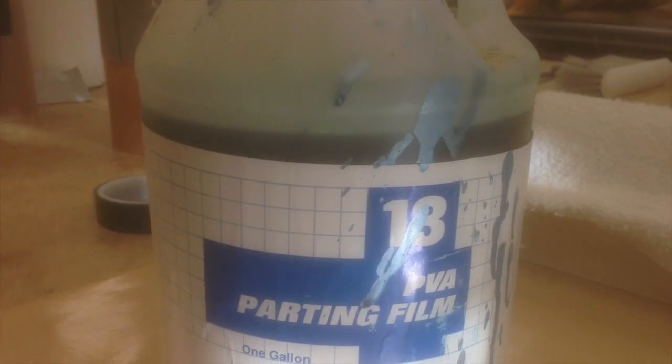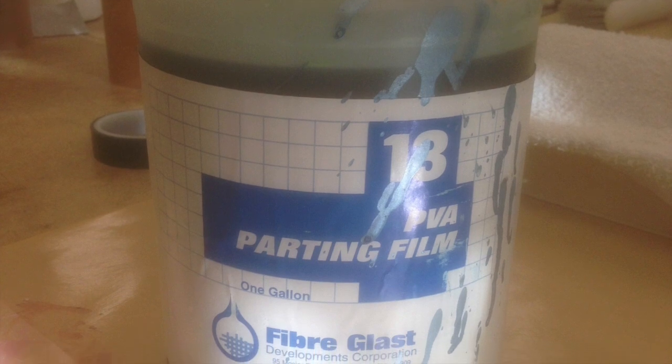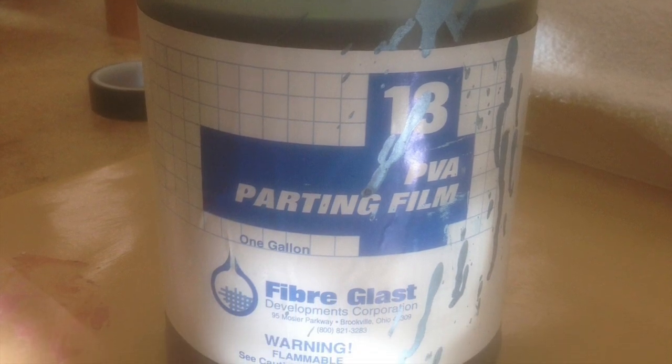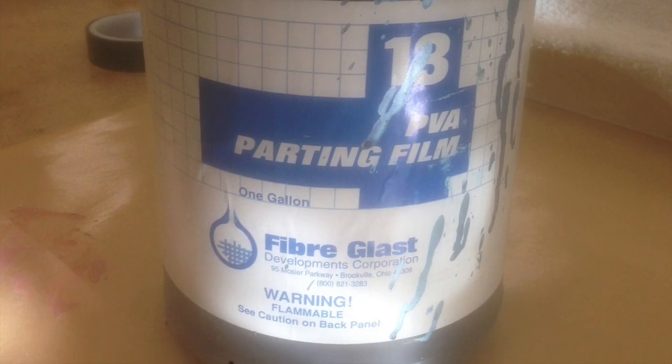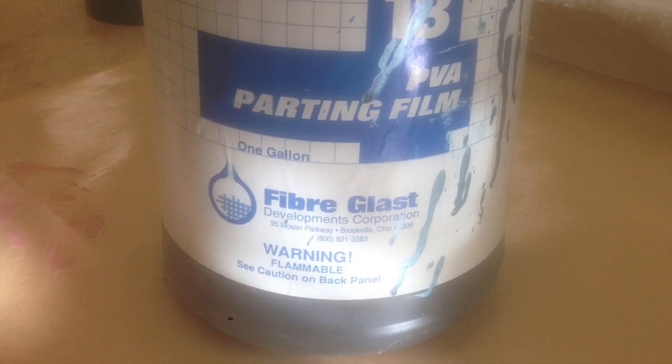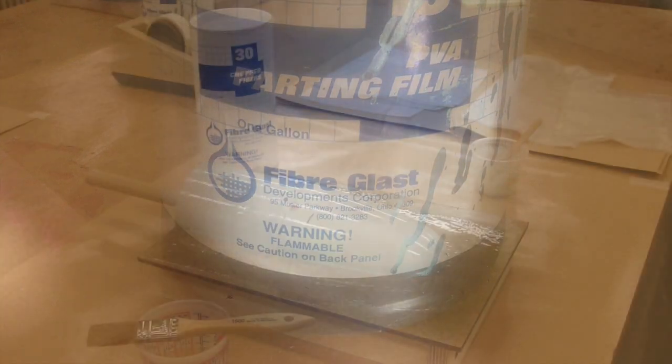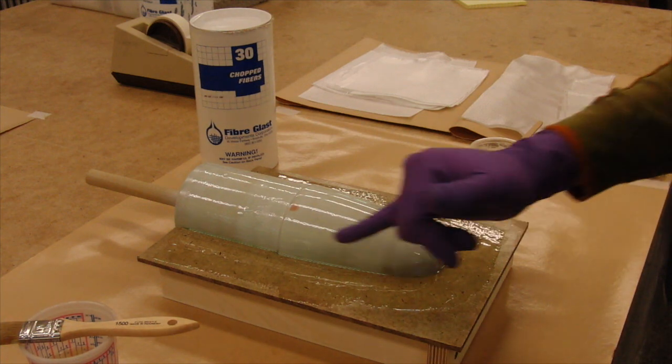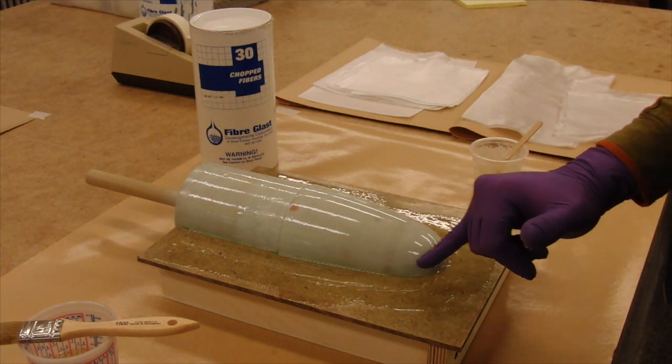And finally, to make sure the epoxy won't stick at all, we paint the plug and the parting board with PVA. This is best sprayed, but it can also be brushed. Areas that are going to be problematic are the sharp corners.